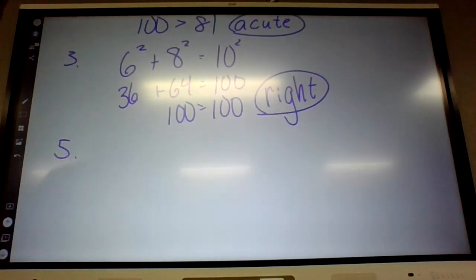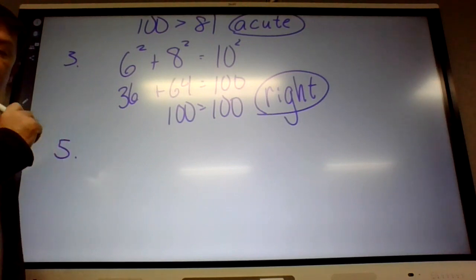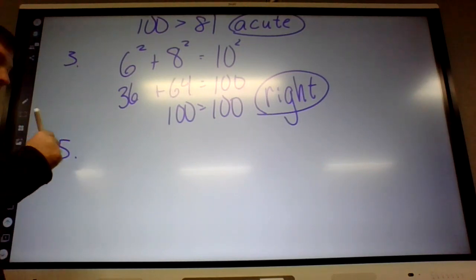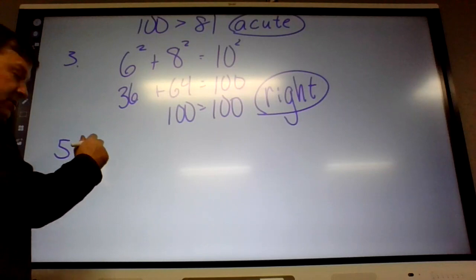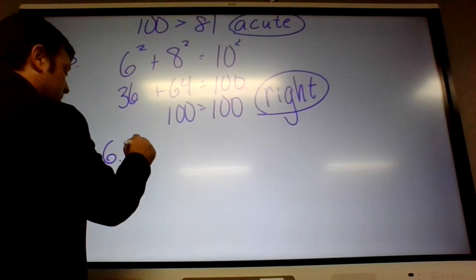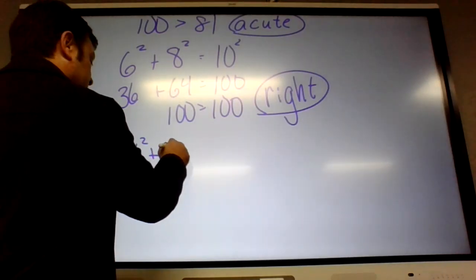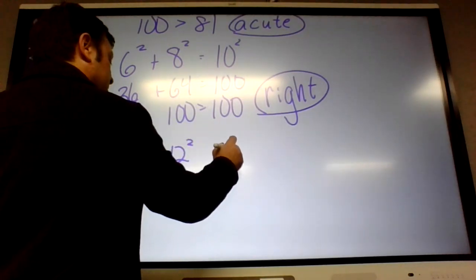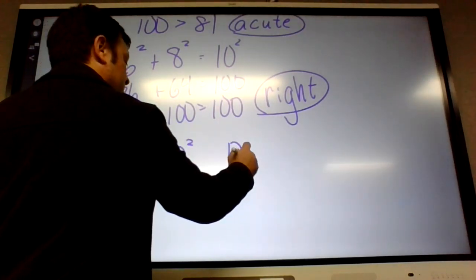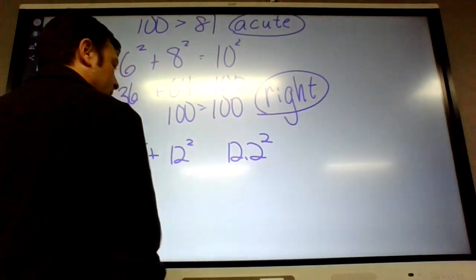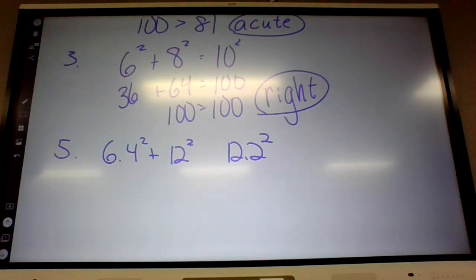Five, we might actually need the calculator for that. Six point... So, C is the largest, so that would be the hypotenuse. That's six point four squared plus twelve squared. There's no way these are equal. Equal twelve point two squared. So that's acute.